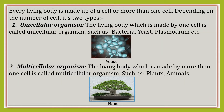Every living body is made up of a cell or more than one cell. Depending on the number of cells, it is of two types: number one, unicellular organism, and number two, multicellular organism. The living body which is made by one cell is called a unicellular organism, such as bacteria, yeast, and plasmodium. The living body which is made by more than one cell is called a multicellular organism, such as plants and animals.